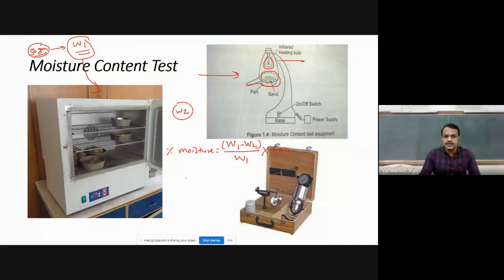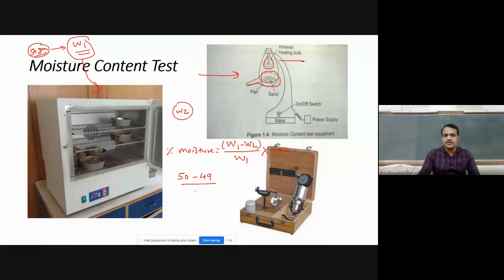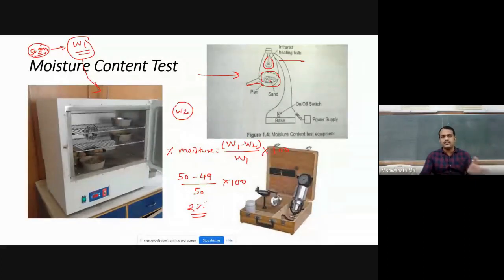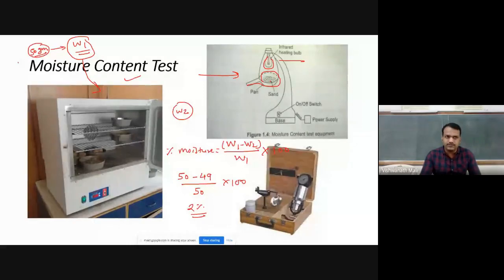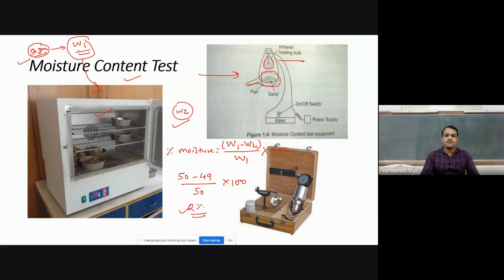For example: W1 = 50 grams, after heating W2 = 49 grams. So moisture content = (50 − 49) / 50 × 100 = 2%. The process requires: weighing 50g of sand, heating in the oven, waiting, then re-weighing. This is the traditional moisture content test method, which takes some time.